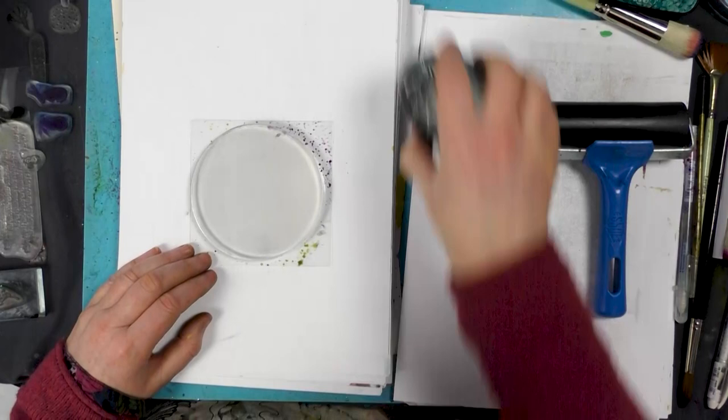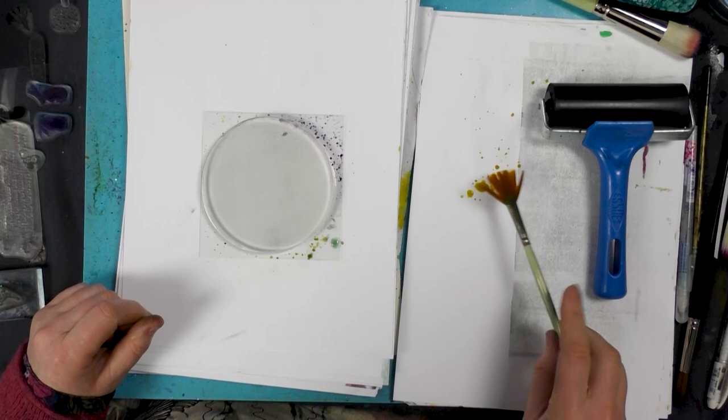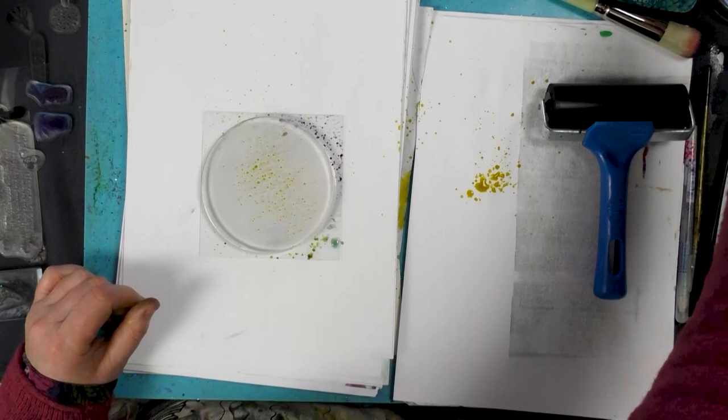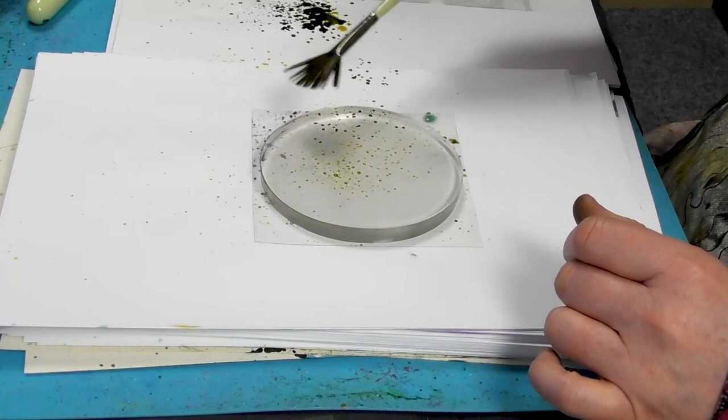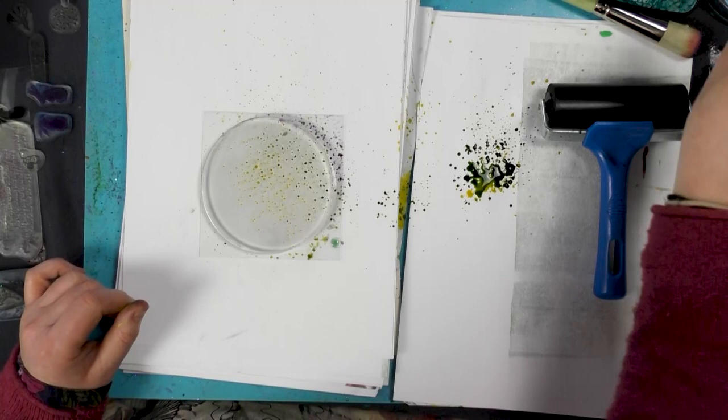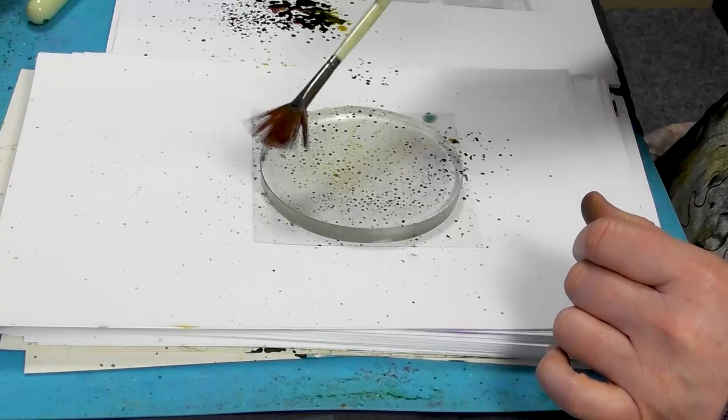Now I'm going to use the fan brush and pick up some yellow. This is really watered-down Brushos. I always water them down a lot to get this effect. Now I'm going to use a little bit of moss green and some purple as well. You only need a couple of colors. If you put too many colors on, it can go very muddy.